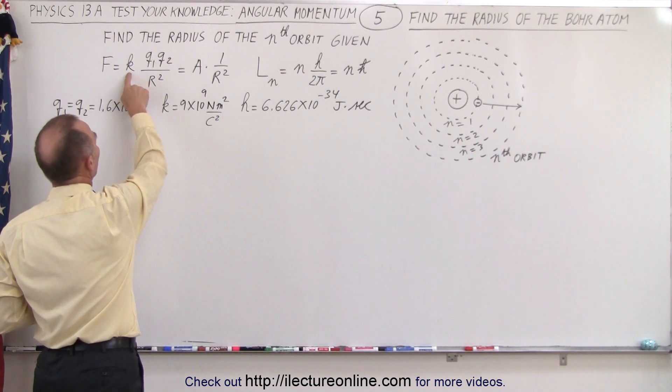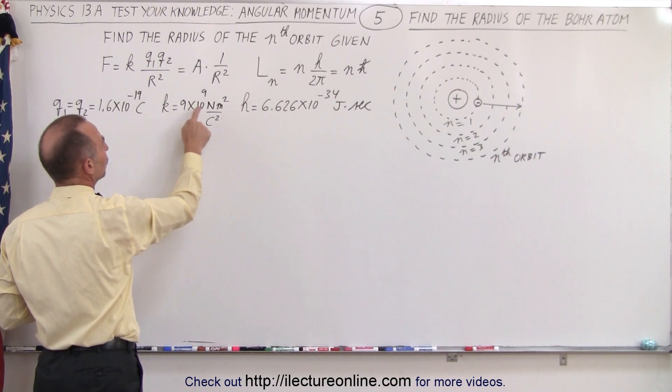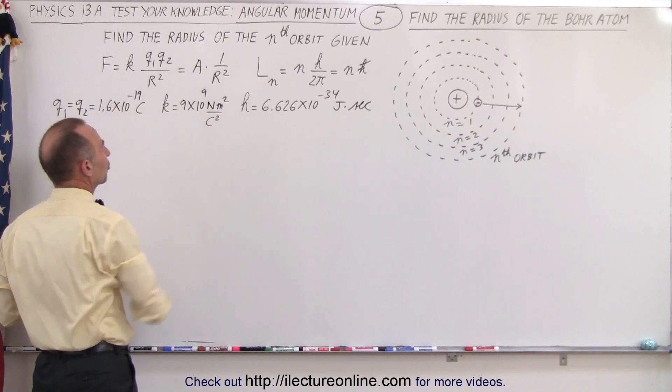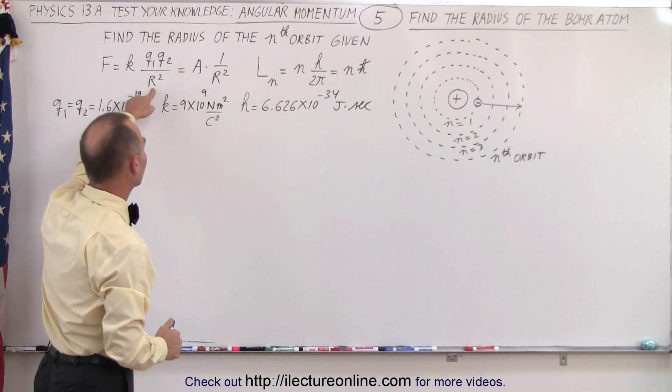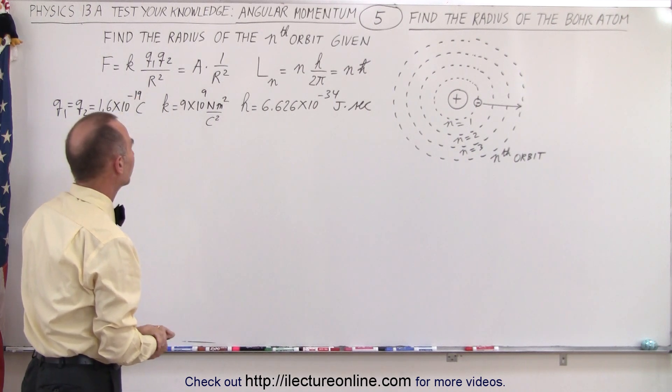k is 1 over 4π epsilon naught, which is about 9 times 10 to the 9th newton meter squared per coulomb squared, and q1 and q2 are the charges on the electrons and the protons. R would then be the distance from the nucleus to the orbit of the electron.